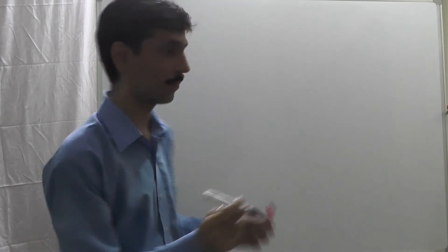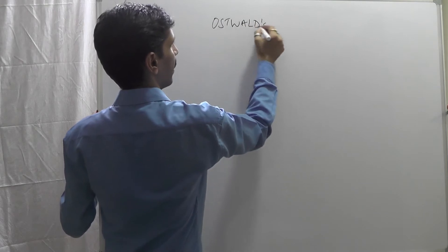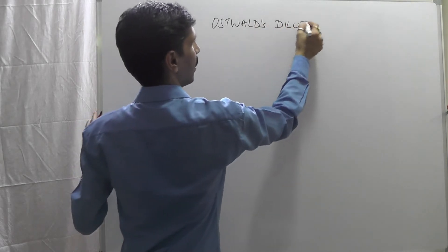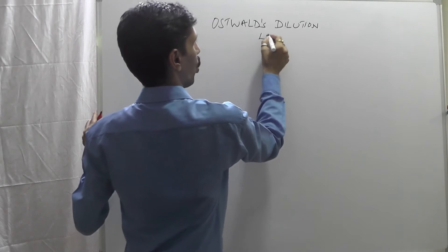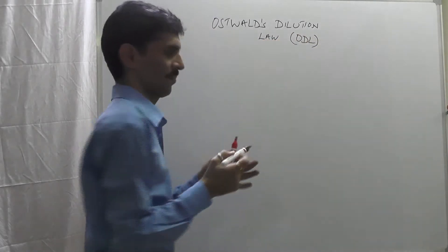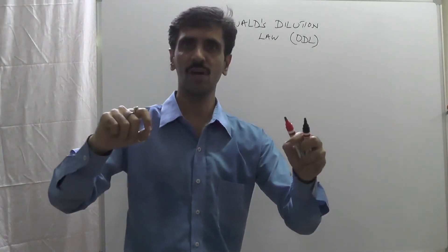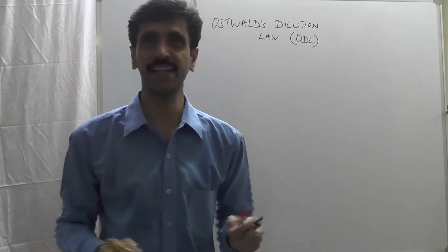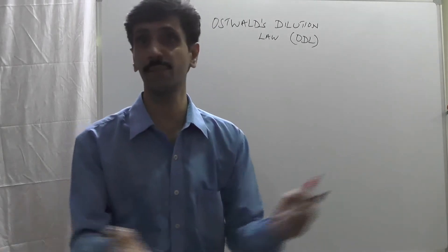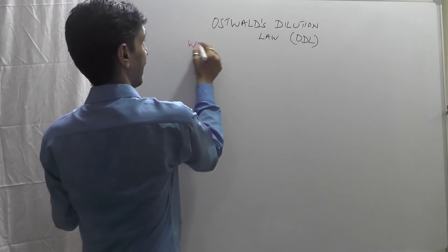The next concept is Ostwald's Dilution Law, abbreviated as ODL. This law discusses the dissociation of a weak electrolyte — it can be either a weak acid or a weak base. Let us start with a derivation for the weak acid.